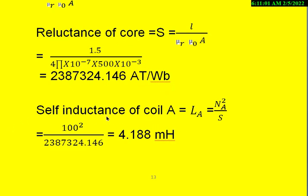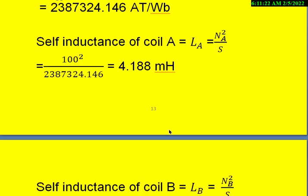Then once we know this reluctance, we can calculate the self-inductance of the coil as NA square divided by S. So the number of turns on coil A is given as 100. So 100 square divided by the reluctance of that is nothing but this value. Substitute that, then we get 4.188 millihenries.